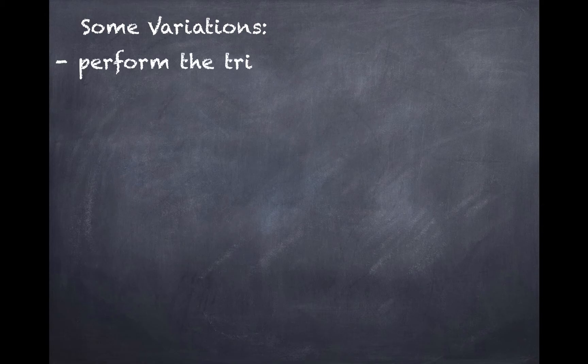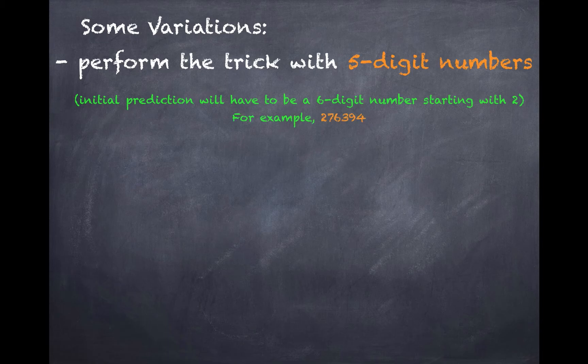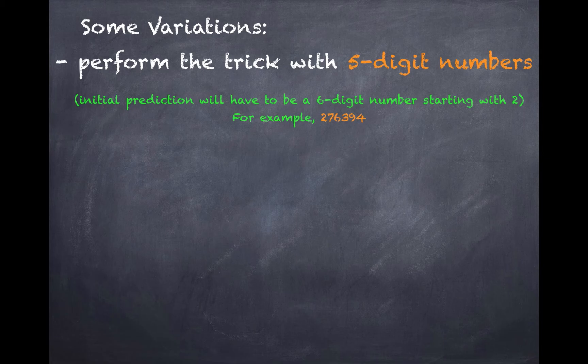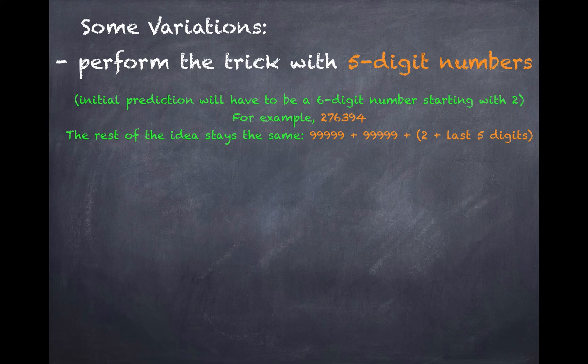Also, this trick can be performed in certain variations. Let's say you want to perform this trick with 5-digit numbers. So in that case, your initial prediction will have to be a 6-digit number starting with a 2. For example, let's say 276394. The rest of the idea stays the same. We're going to add five 9s twice in this case. And for the last 5 digits, which is 76394, we're going to add 2. So our first number will be 76396, and the remaining two will just manage depending on what our audience gives us.